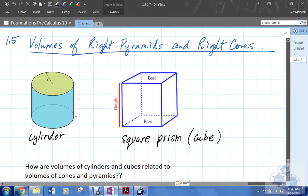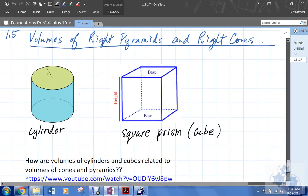So just once again, as we start 1.5 here, volumes of right pyramids and right cones. The volumes of right pyramids and right cones are related to cylinders and square prisms.